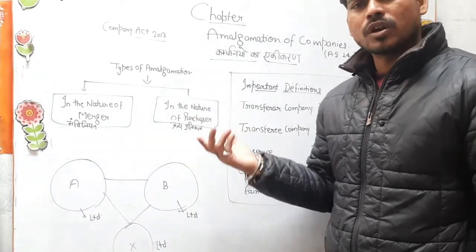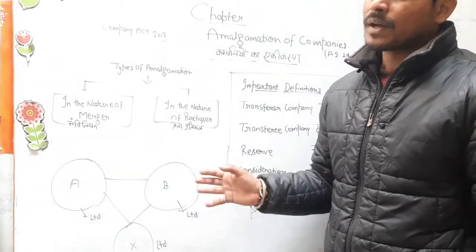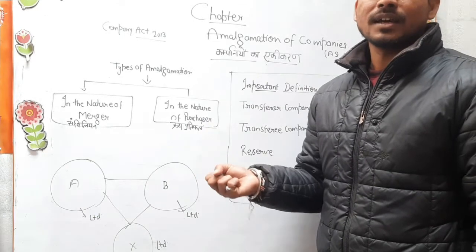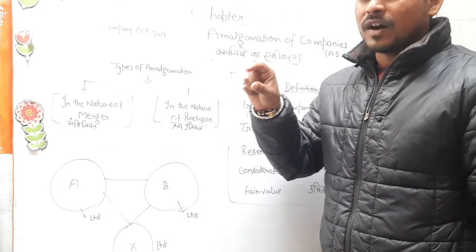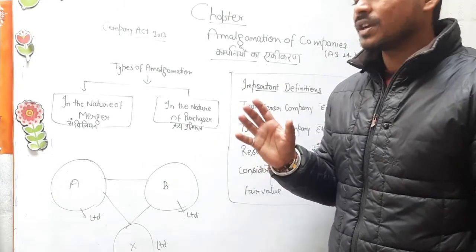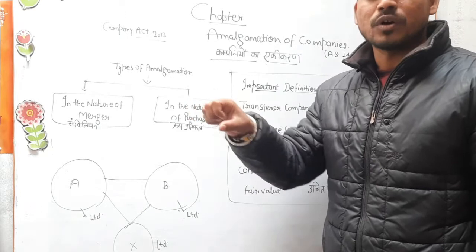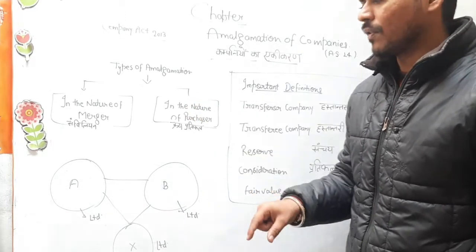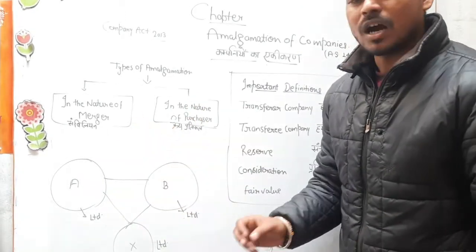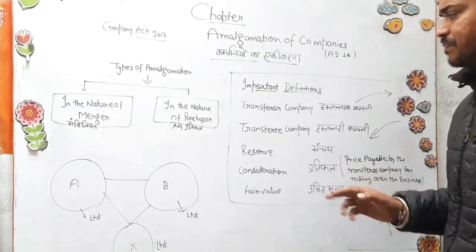दूसरी ओर जब हम देखते हैं amalgamation in the nature of purchase, तो वहाँ पर एक कंपनी दूसरी कंपनी में मिलना तो चाहती है लेकिन उसको कुछ personal consideration चाहिए — वो ऐसे नहीं मिलेगी, उसको कुछ प्रतिफल चाहिए। आइए इस structure का हम help अपने आने वाले topics में लेते हैं।